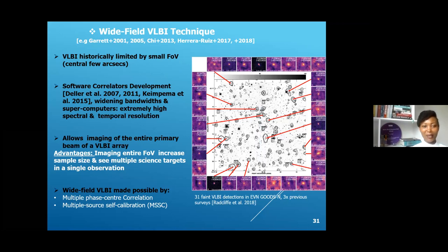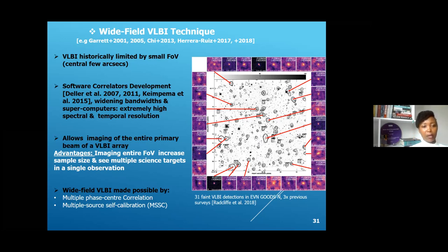Historically, VLBI has been limited by a small field of view — we could only image the few central arc minutes or arc seconds of an observation. However, recent development in software correlators, widening bandwidth in observation, and developments in computers have enabled correlation of VLBI data to extremely high spectral and temporal resolution in terms of time and frequency.